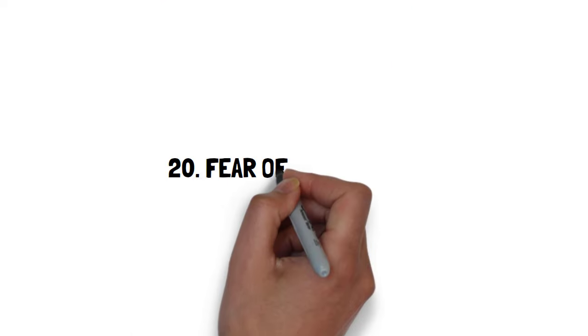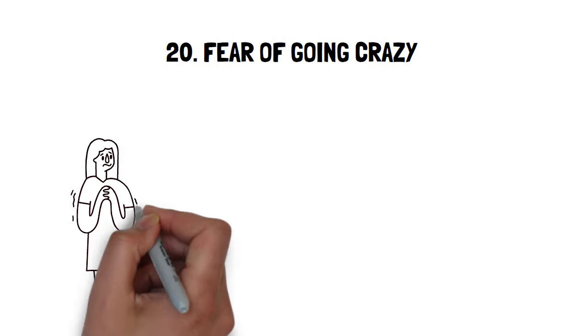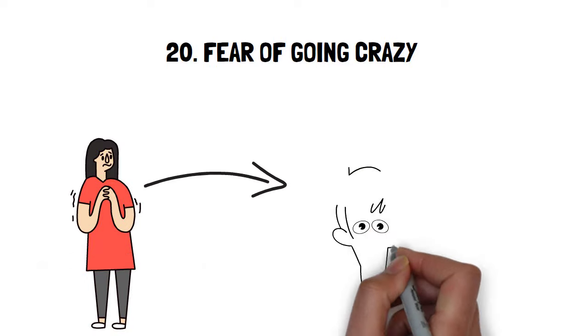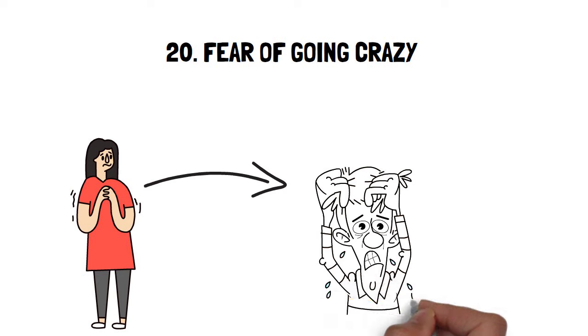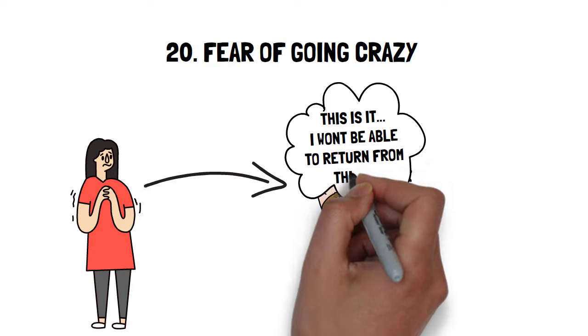Twenty, fear of going crazy. There were times where my anxiety or panic were so intense. I would be pacing up and down in my room thinking and worrying that I was just about to go properly insane. Standing right at the edge of insanity, not being able to then return. It really felt like I was just about to go crazy.